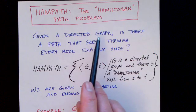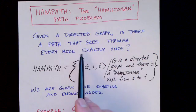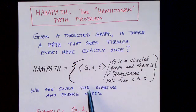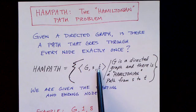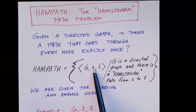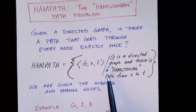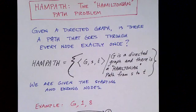So first of all, let me describe the problem. Given a directed graph, the question is, is there a path that goes through every node exactly once? And in particular, like in the previous path problem, we're given the starting node and the ending node, S and T. Again, we have a directed graph. We have a starting node and an ending node. The question is not whether there's a path from S to T, but whether there's a path going through all nodes exactly once from S to T.